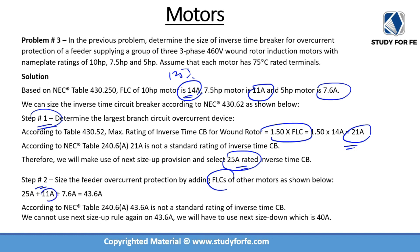So 11 amps plus 7.6 amps plus 25 amps gives us 43.6 amps. Another common mistake is sizing up because 43.6 amps is not a standard rating — but that is not allowed in step 2. You may go to the next higher rating in step 1, but in step 2 you can only size down. Since 43.6 amps is not a standard rating, the next size down is 40 amps, which is the correct answer.